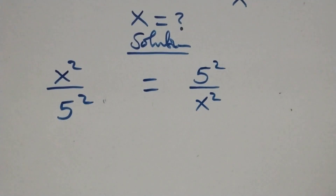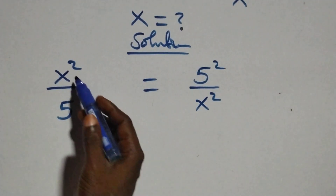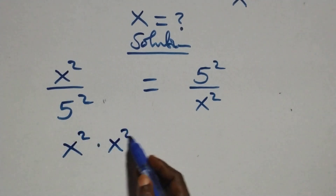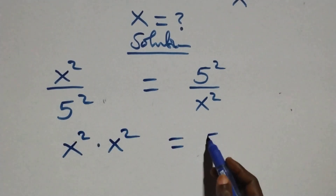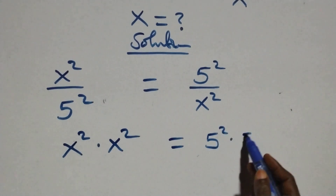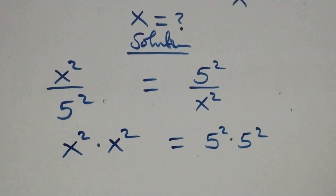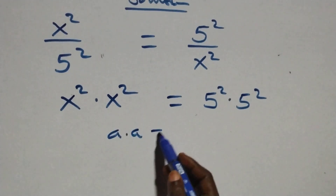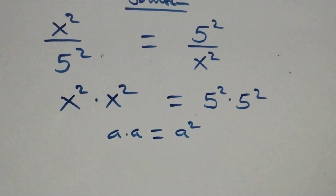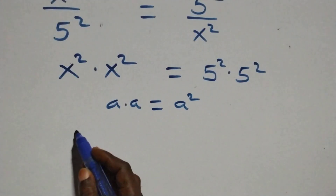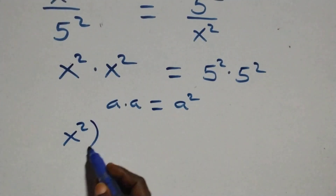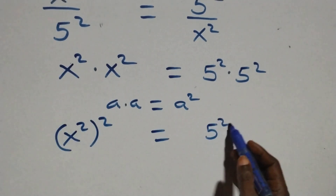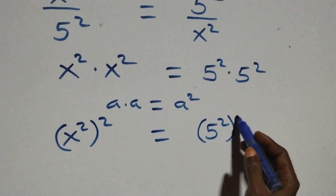The next step here we cross multiply: x squared times x squared, then equals also 5 squared times 5 squared. This follows when we have a times a which we can write as a squared, and the same thing here gives us x squared to the power of 2 equals 5 squared to the power of 2.